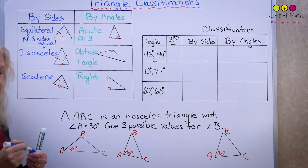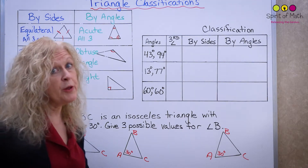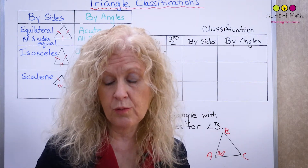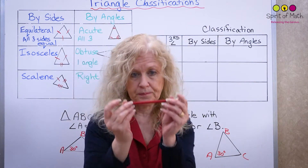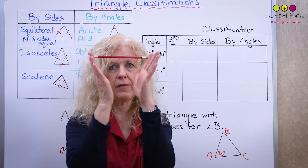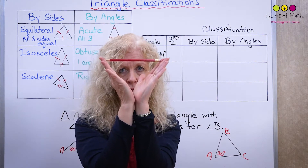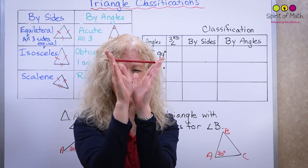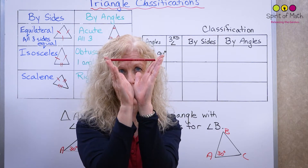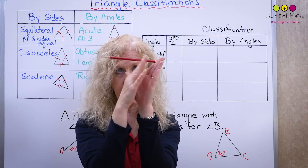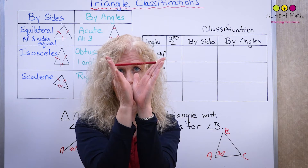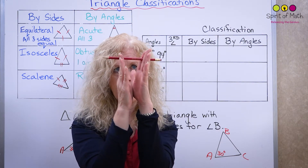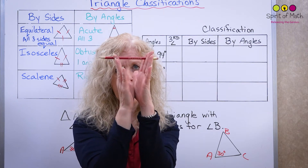There's something cool that happens when all three sides are equal, because of the way that triangles work. Here's something to show you: this is one side of a triangle and my hands are the other two sides. Watch carefully — as this side gets smaller, the angle opposite it is also getting smaller.